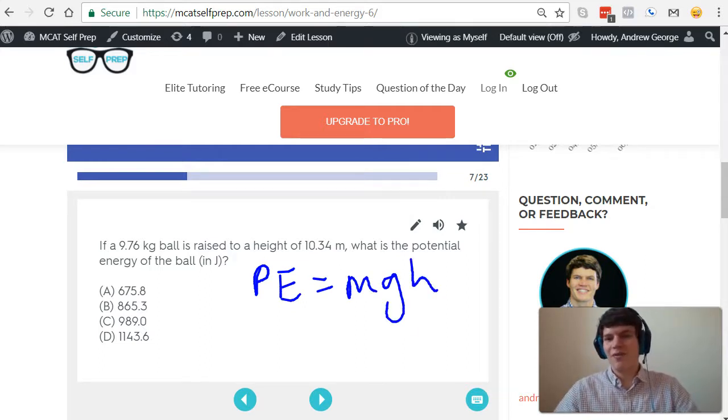And the MCAT loves to trick you by giving you useless details. For instance, the question might tell you that the ball was raised using a crane, it might tell you that it was raised using a pulley, or that it was dropped by an airplane.